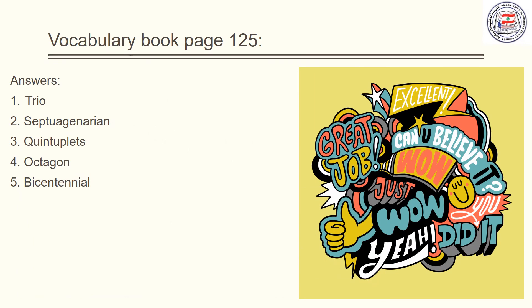Here are the answers. One, Trio. Two, Septuagenarian. Three, Quintuplets. Four, Octagon. Five, Bicentennial.